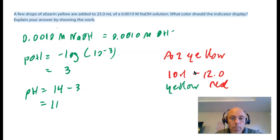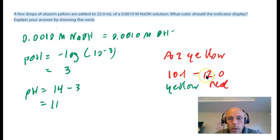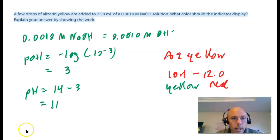Had the pH been 10.1 or less, it would be yellow. Had the pH been 12.0 or greater, it would be red. Anywhere between 10.1 and 12, it's transitioning from yellow to red — so some version of yellowy orange or orangey red.